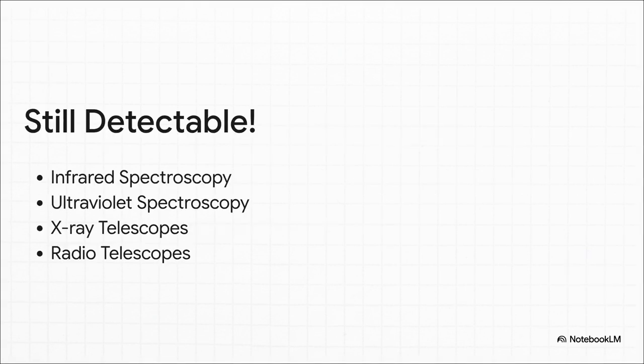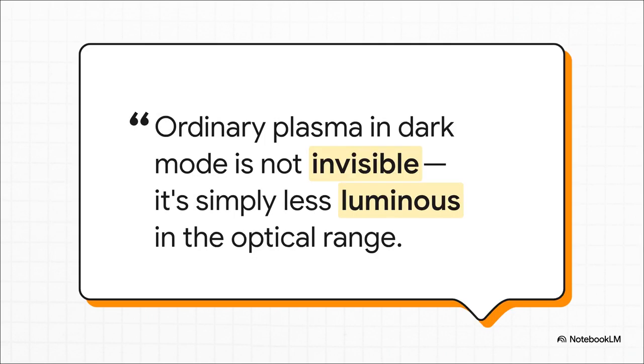But here's the kicker. Even when it's not shining brightly, this so-called dark mode plasma is far from hidden. Our instruments are so much more powerful than our eyeballs. We can easily detect the heat it's giving off with infrared spectroscopy, or we can pick up its high energy signatures with X-ray and radio telescopes. It's still there, loud and clear, just not in the tiny sliver of light that we call the visible spectrum. And really, that's the bottom line right there. The stuff isn't truly invisible. It's just a little camera shy, you could say. It's still interacting with light and energy in all sorts of ways we can measure. It's still playing by the same old rules of physics we know and love.